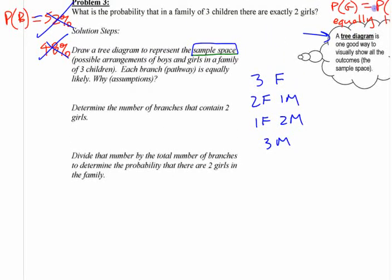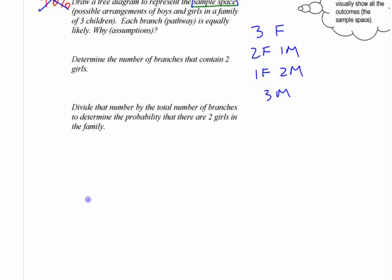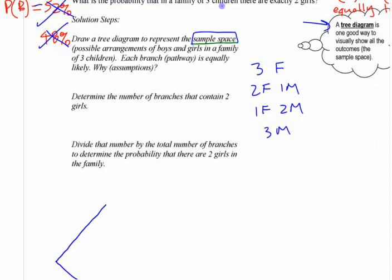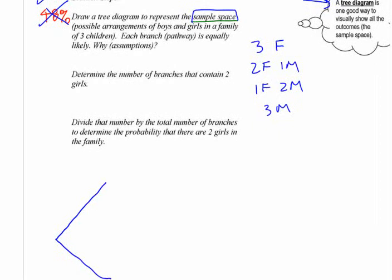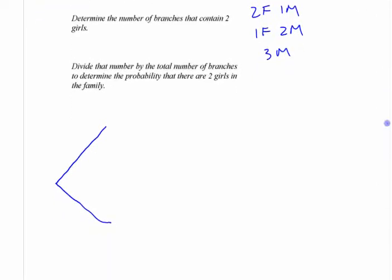All we're assuming is that the chance on each birth, there's an equal chance. So it probably helps to generate the list by looking at a tree diagram here. This is one way you can see the sample space for something.